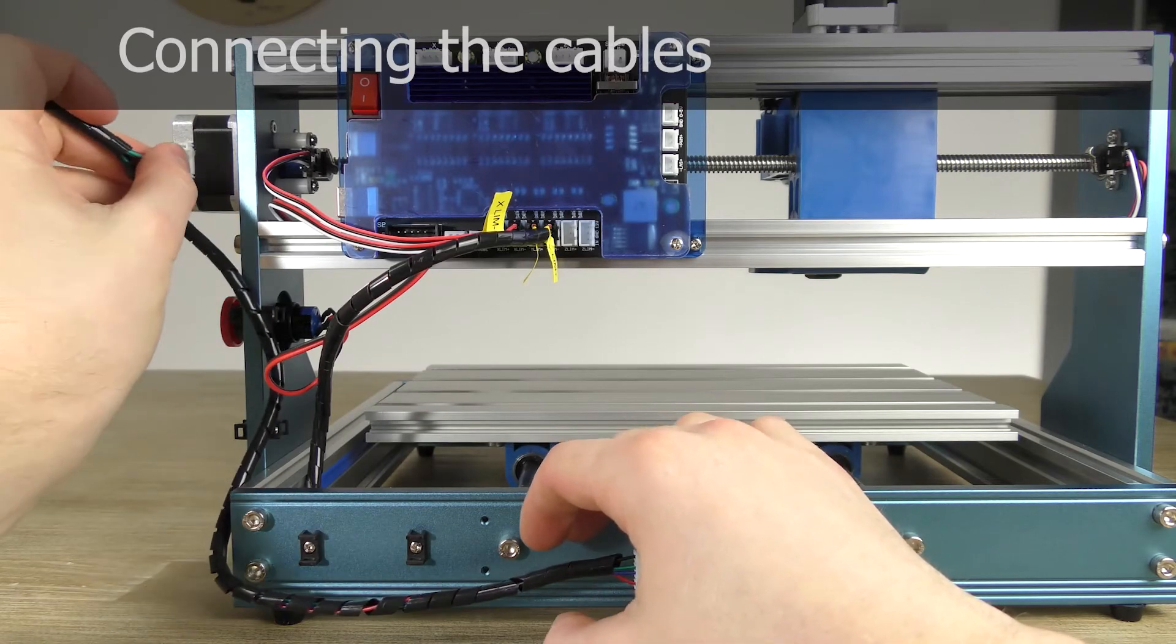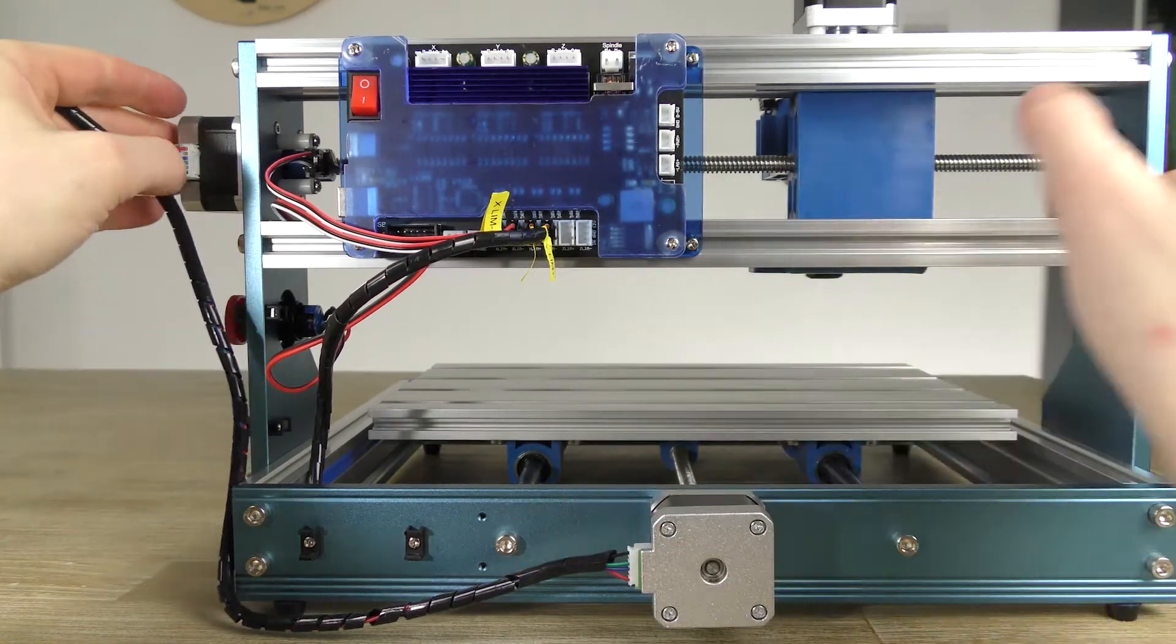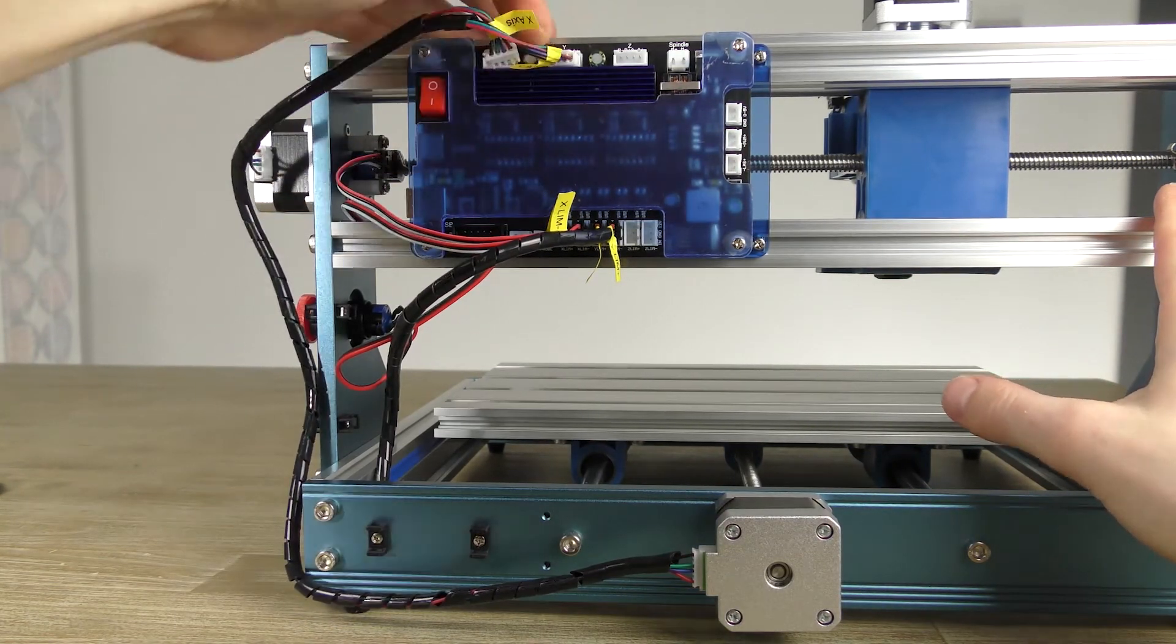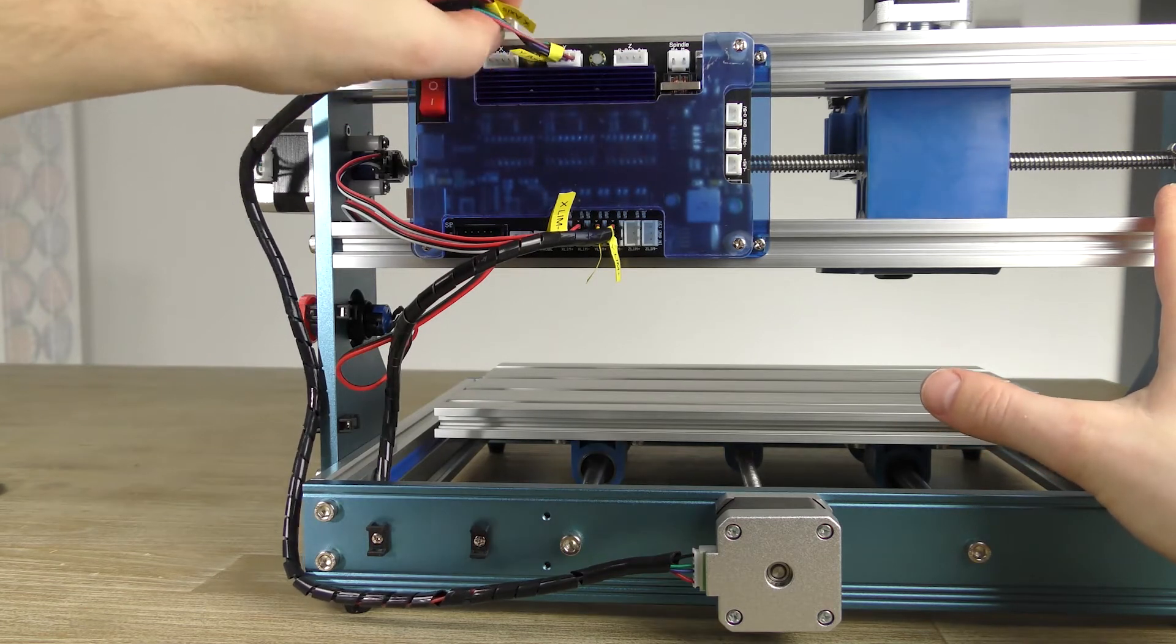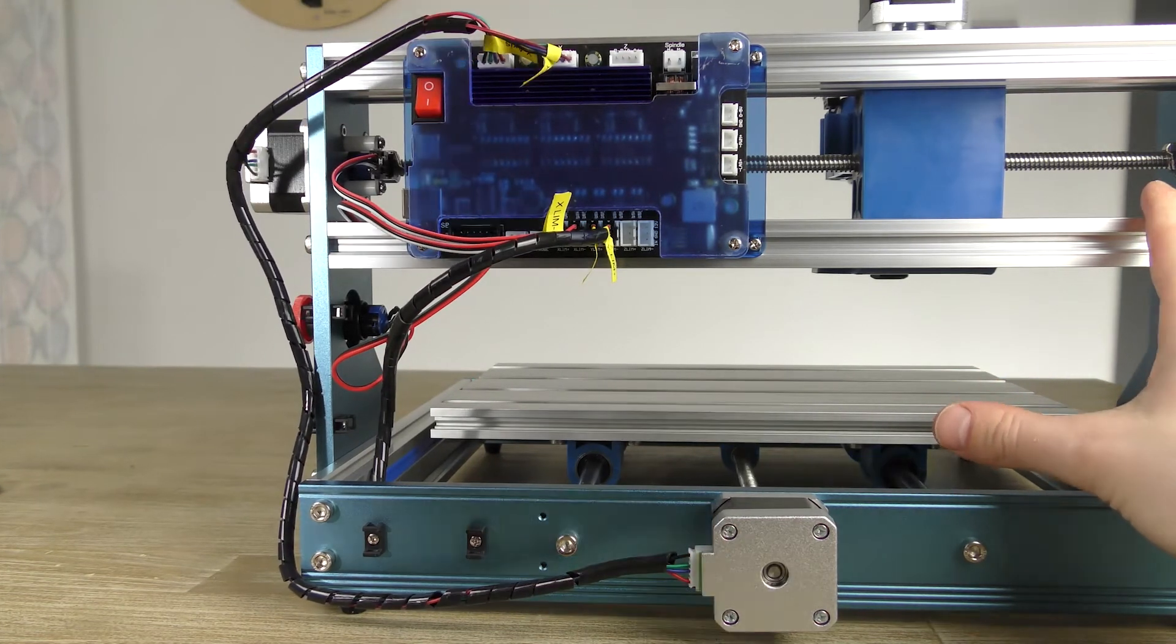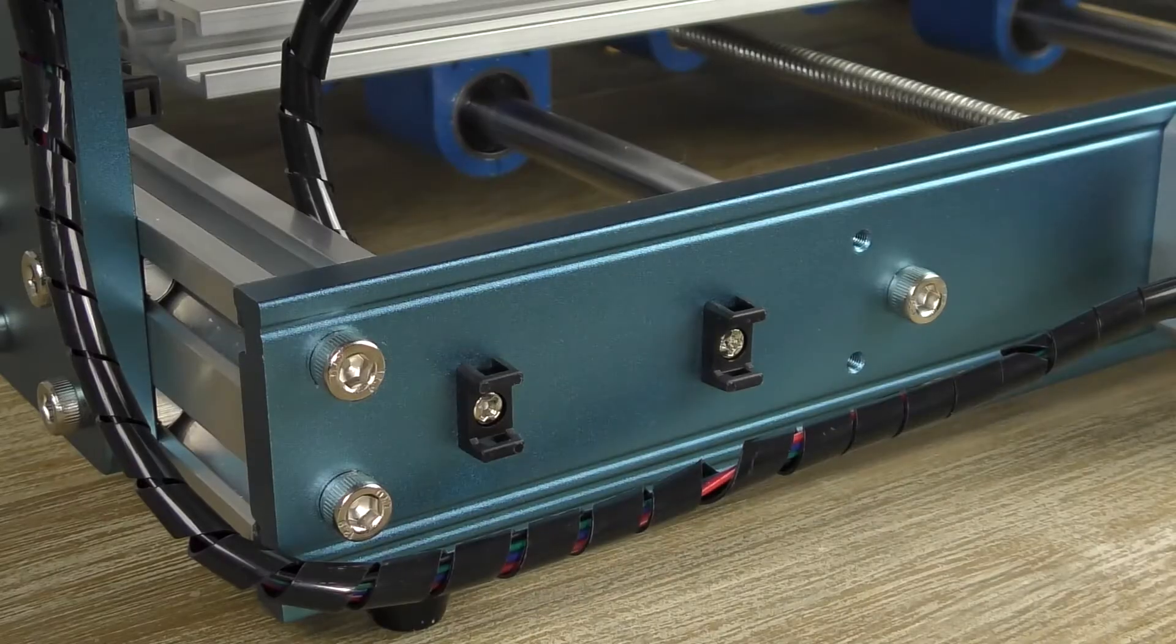I did the sleeving process a few times because of small adjustments. I suggest you do the sleeving after you tested the machine using a computer or offline remote. The cables and connections are well labelled and I'm confident anyone can do this.